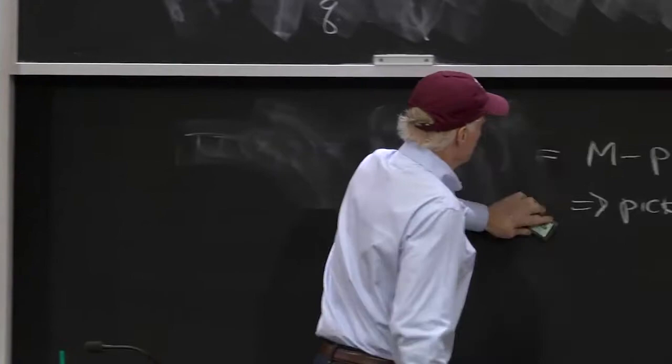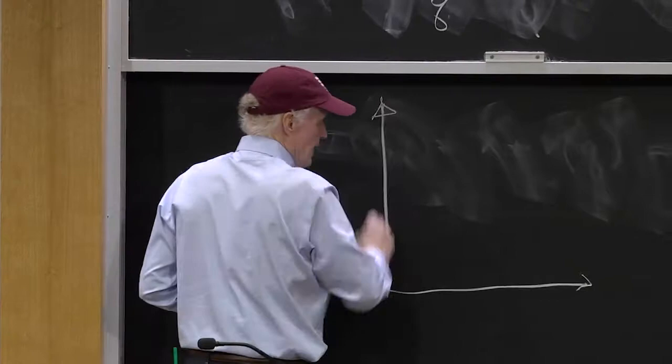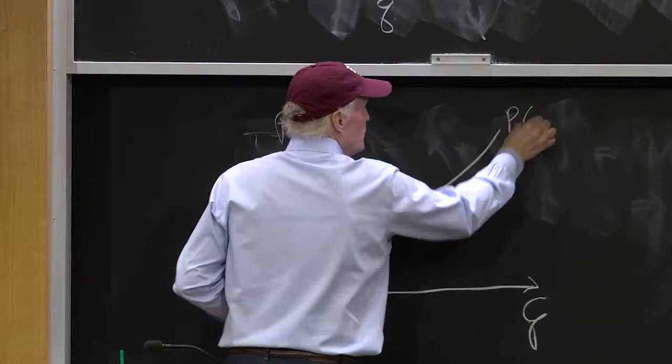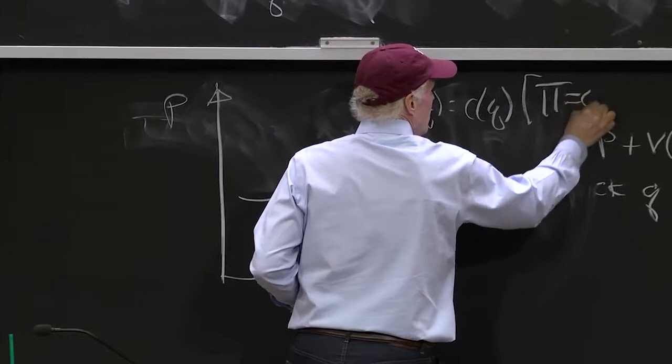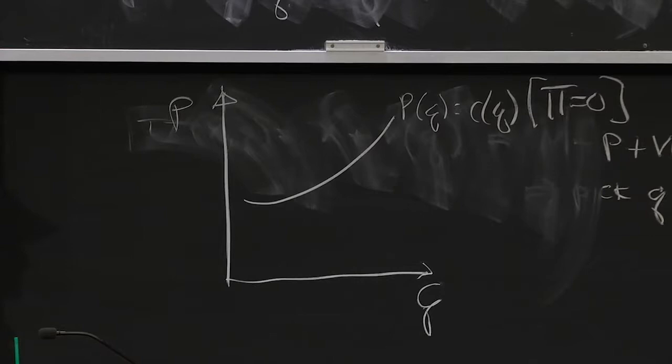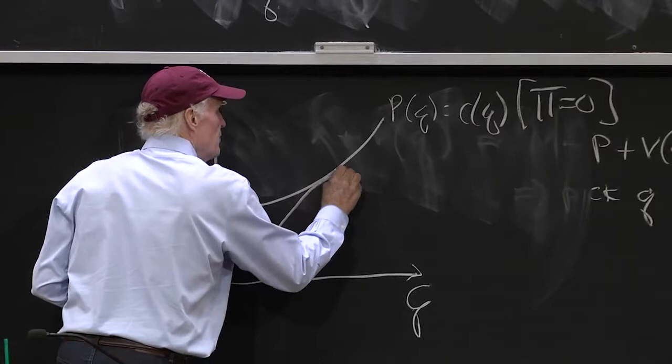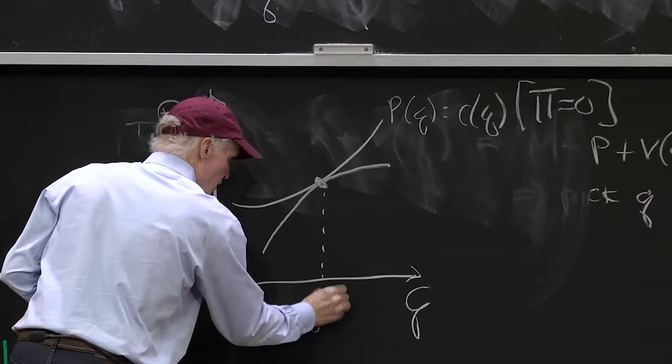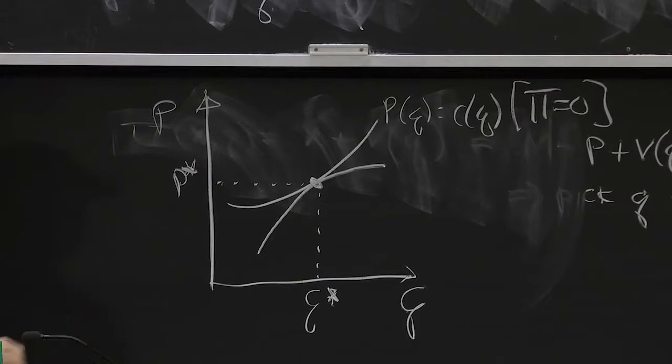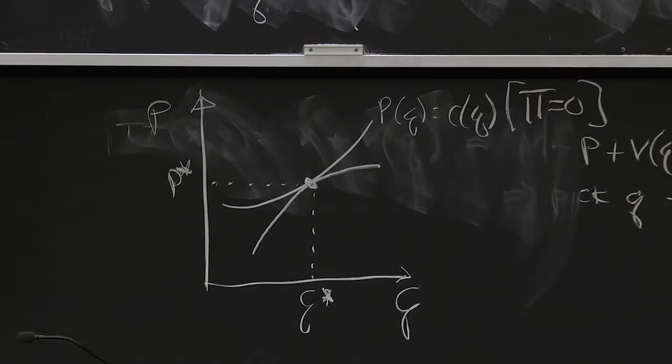So if I assume, now I can redraw my picture, same picture actually. I got Q, I got P, I got P of Q equals C of Q, which is pi equals zero, my zero profit curve. And then where's my consumers going to go? Well, my consumer is going to choose the quality level that makes him the best off, Q star and P star. So that would be my choice. That's where the consumers would go.